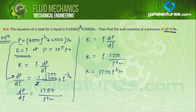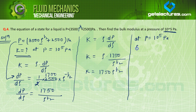At P = 10⁵ Pascal, substituting into the equation P = 3500 × ρ^(1/2) + 2500: 10⁵ = 3500 × ρ^(1/2) + 2500. We use this boundary condition to find ρ^(1/2) at that pressure.